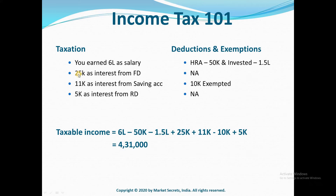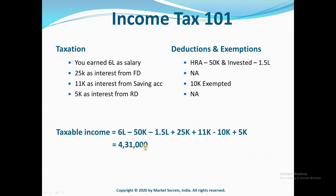Now moving on, you got 25,000 rupees as interest from your FD — there are no exemptions for this, it will be completely taxable, so you add it to your taxable income. The third item: you got 11,000 rupees as interest from your savings account, and as mentioned earlier, interest up to 10,000 rupees will be completely exempted. So I'm adding this 11K and reducing 10K. And finally, you have 5,000 rupees as interest from RD and there are no exemptions for that, so I'm directly adding it to my taxable income. So your taxable income will be in total 4,31,000 rupees.